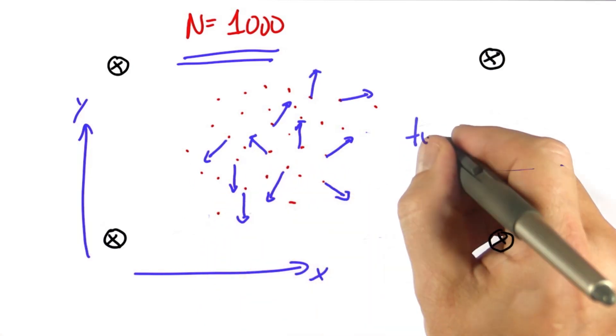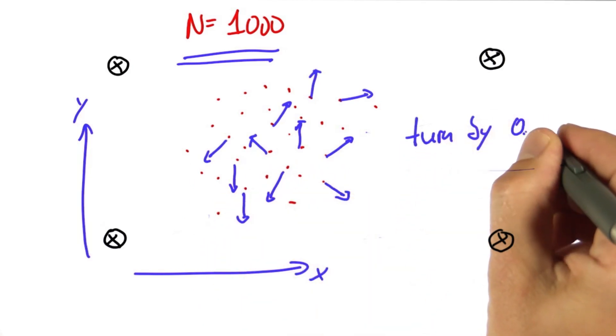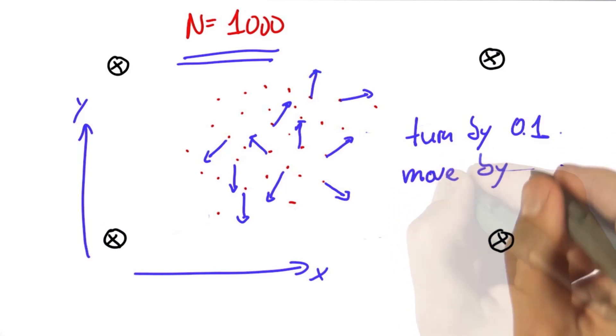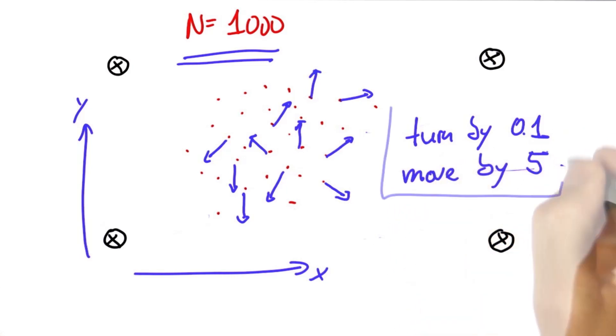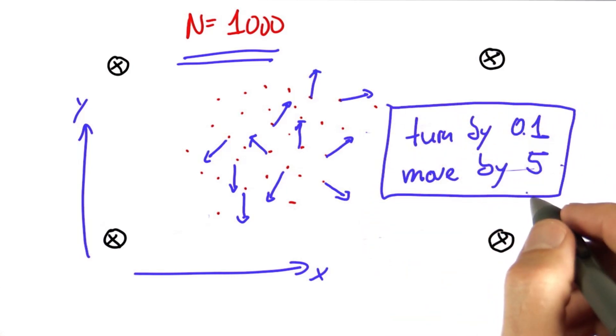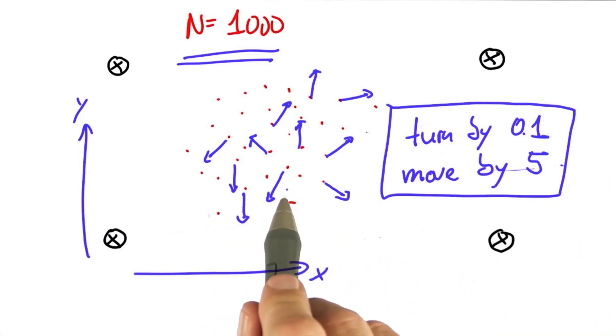So each of these particles shall first turn by 0.1 and then move by 5 meters. We already implemented something just like this for an individual robot motion. Now I'd like you to apply this to the entire particle set.